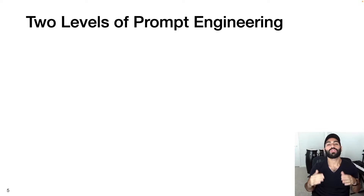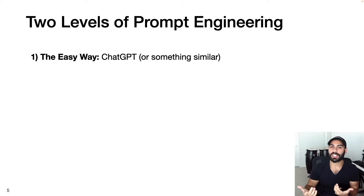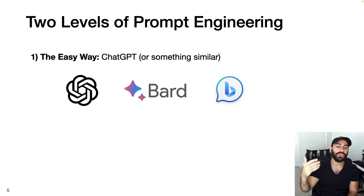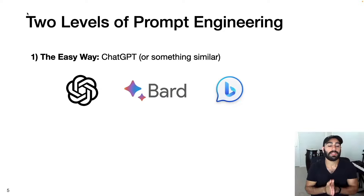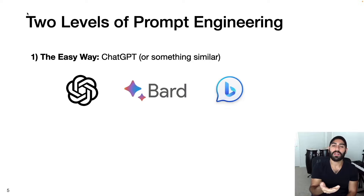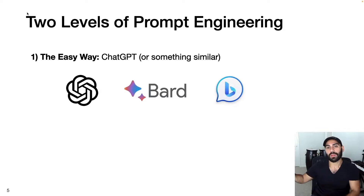There are two levels of prompt engineering. The first is what I call the easy way, which is essentially ChatGPT or something similar — Google has Bard, Microsoft has Bing Chat. These applications provide a very user-friendly and intuitive interface for interacting with large language models. While this is the easiest and cheapest way to interact with LLMs, it is a bit restrictive in that you can't really use ChatGPT to build an app or integrate it into a larger application.